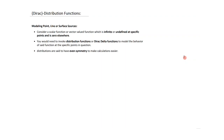The question of modeling point, line, or surface sources: first, consider a scalar or vector-valued function which is infinite or undefined at specific points and zero elsewhere. Second, you would need to invoke distribution functions or Dirac delta functions to model the behavior of said function at the specific points in question. Third, the distributions we consider are said to have even symmetry to make calculations easier.